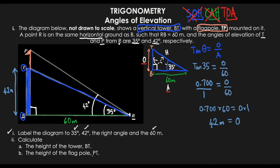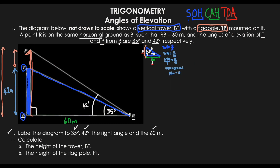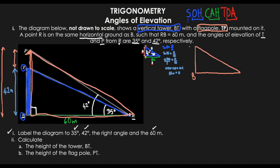The next part asks us to find the height of the flagpole PT. To find this, we first need to find the overall height from the bottom to P. Think of it like this: if someone is 6 feet tall and stands next to someone 4 feet tall, the difference is 2 feet. Similarly, if we can find the overall height BP, we subtract 42 meters to get PT. We now look at the outer triangle from B to P, with 42 degrees as the angle of elevation.